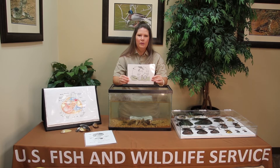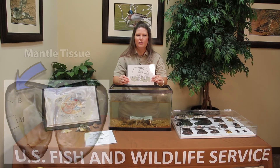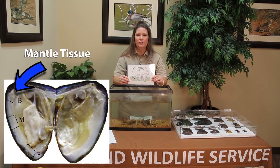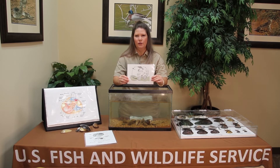To help ensure that they find a host fish, some species of mussels have developed a special adaptation. Some female mussels have enlarged mantle tissue that looks like prey to attract a fish. When the fish nip at the lure, the female releases glochidia into the water column directly in front of the fish host.